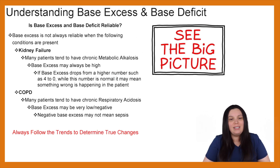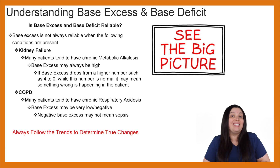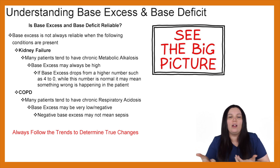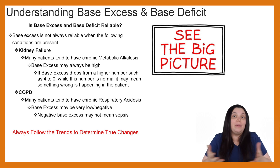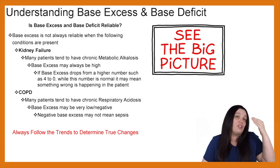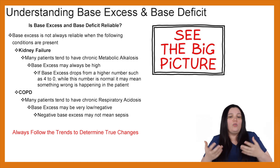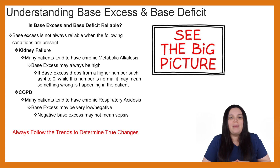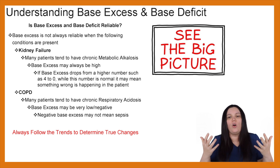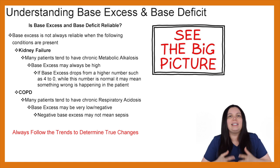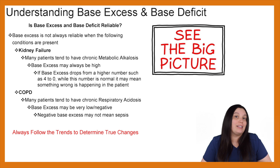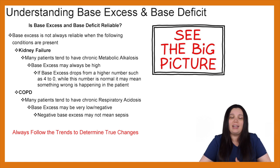The big question is: is base excess and base deficit reliable? Base excess is not always reliable when certain conditions are present. When we have a patient with kidney failure, many tend to have chronic metabolic alkalosis, so base excess may always be high. If the base excess drops from a higher number such as 4 to 0 — while that falls within the normal range — it may mean something serious is happening. With our renal patients, if they normally have a base of 4 and now they're at 0, that's a major drop and something we have to address.